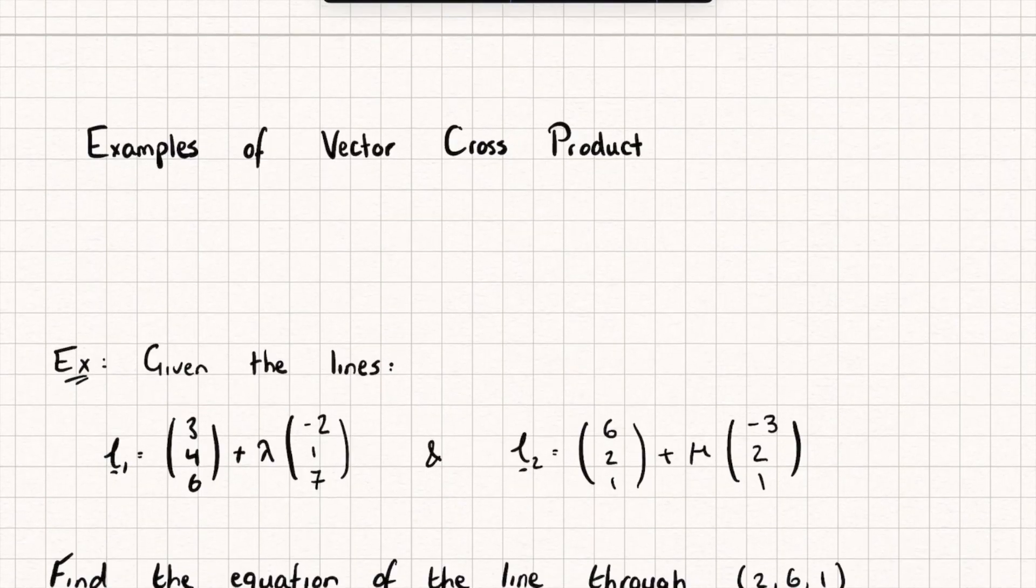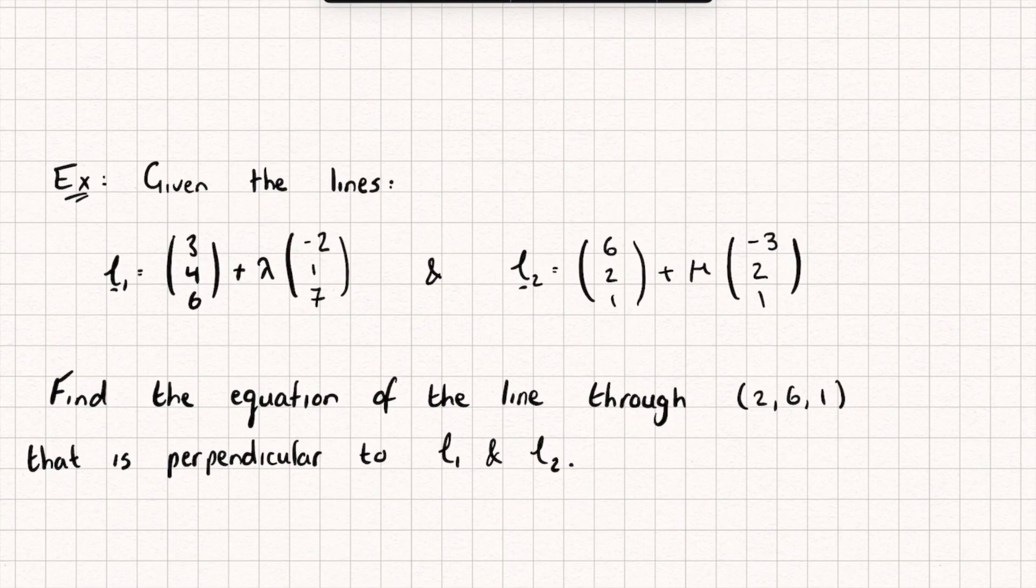Okay, so let's look at this question here. We're given the lines L1 and L2 and we're asked to find the equation of the line through the point (2,6,1) that is also perpendicular to both line 1 and line 2.